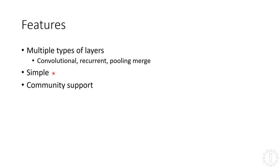Keras is also fairly simple — maybe not as simple as the multilayer perceptron in scikit-learn, but it's still fairly simple to use and build neural networks with. And finally, it has large community support, so if we ever run into any problems, we can easily find the solution to them.